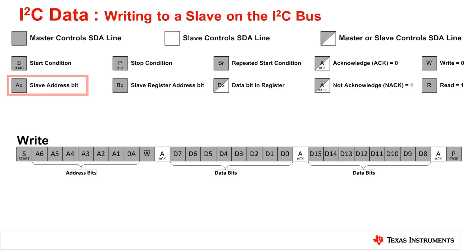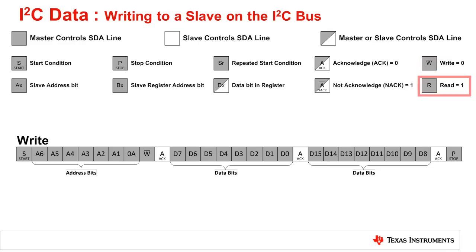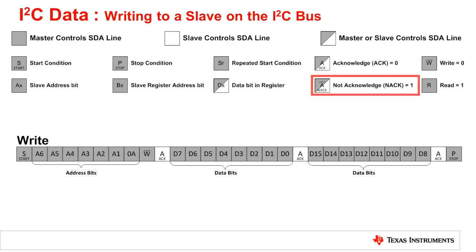Address bits are designated by the letter A. Register address bits are designated by the letter B. Data bits are designated by the letter D. The read-write bit can be either a write, which is shown as a negated W and is performed when the bit is 0, or a read, which is shown as an R and is performed when it is a 1. The ninth bit is always either an acknowledgment, represented as A or ACK and is 0, or a not-acknowledgment, represented as a negated A or NACK and is a 1.